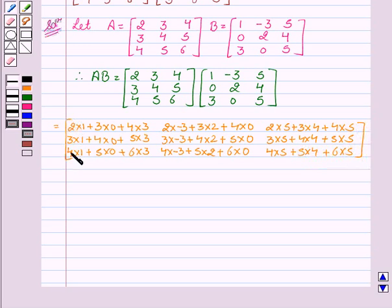So, this is equal to 2 plus 0 plus 12, minus 6 plus 6 plus 0, 10 plus 10 plus 12 plus 20.